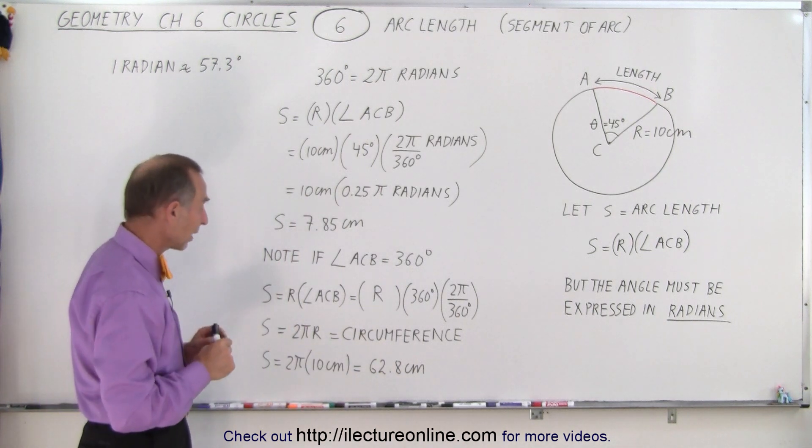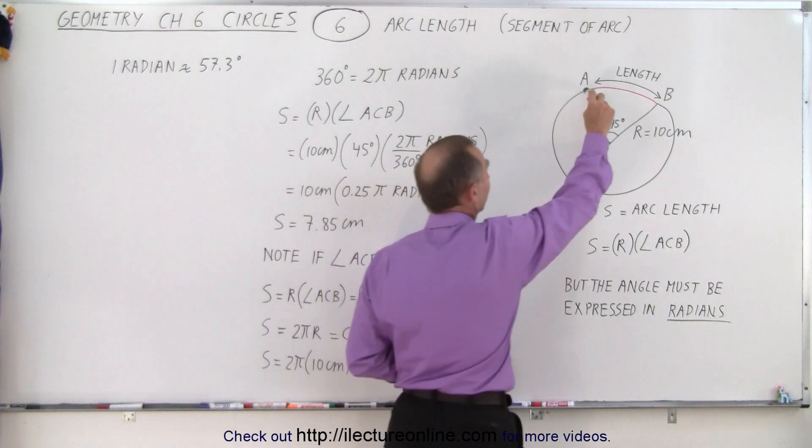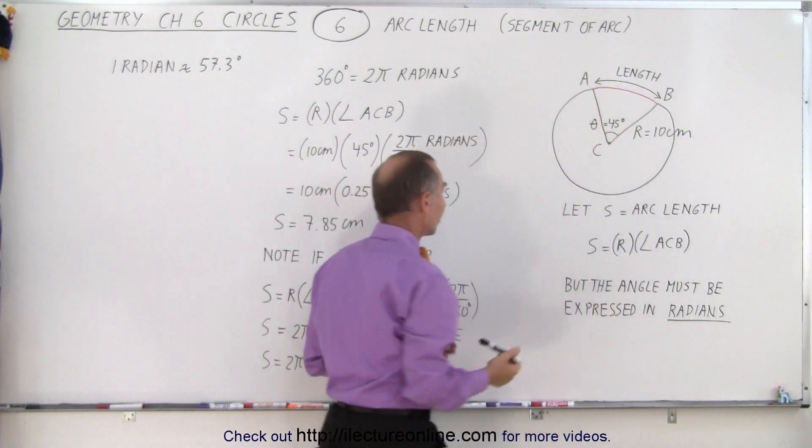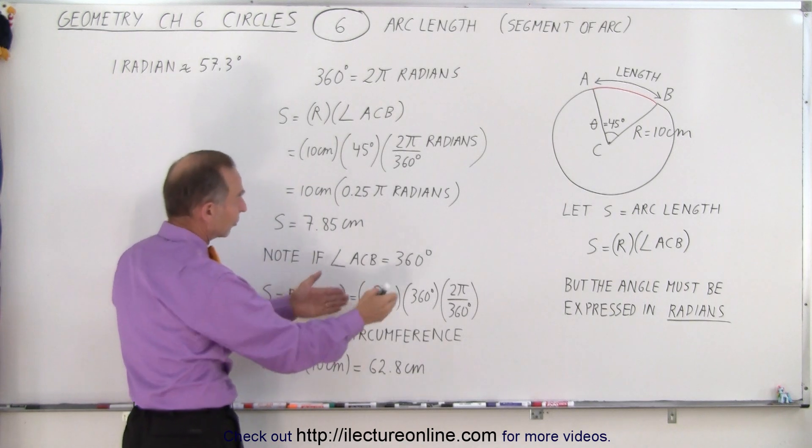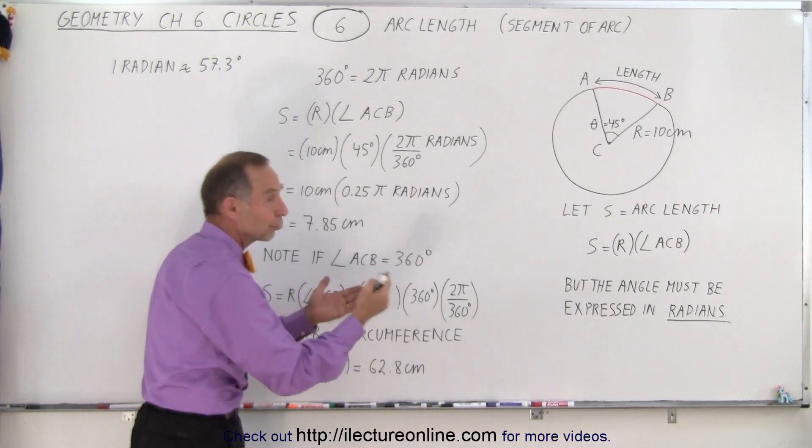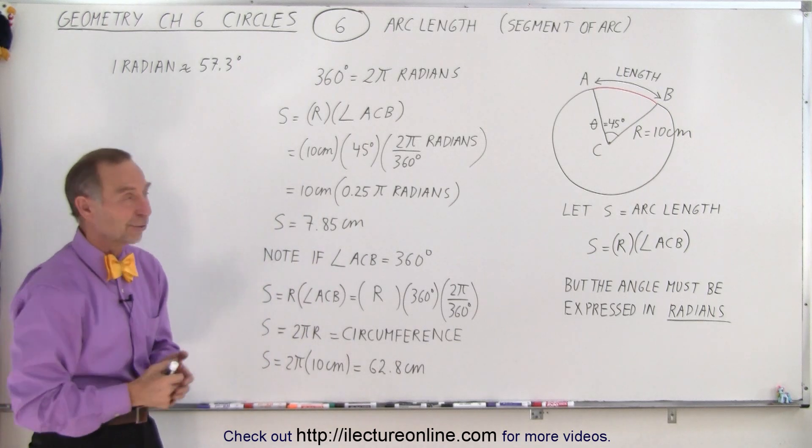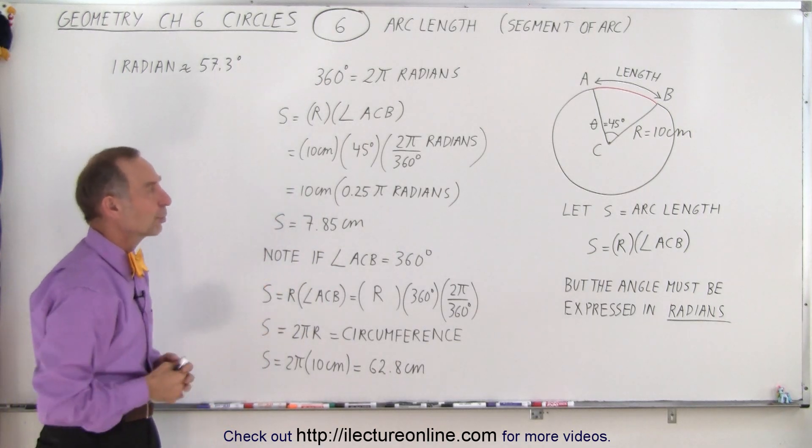But the key here is to realize that if the arc goes all the way around the circle, then of course, to get the arc length, it simply would be the radius times the angle. But if the angle is 360 degrees, it would be the radius times 2 pi or 2 pi r, which is the circumference of the circle. So you see the connection between the two.